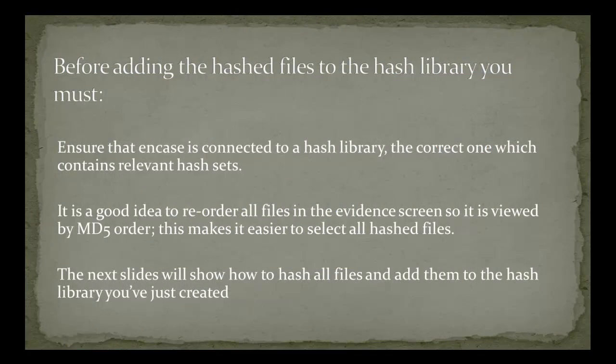Before we add the hashed files to the hash library, just a few points. Ensure that NCASE is connected to the hash library — the correct one which contains relevant hash sets. You may have many hash libraries, so make sure you're connected to the correct one. It is a good idea to reorder all files in the evidence screen so it is viewed in MD5 order. This makes it easier to select all hash files. The next slides will show you how to hash all files and add them to the hash library.